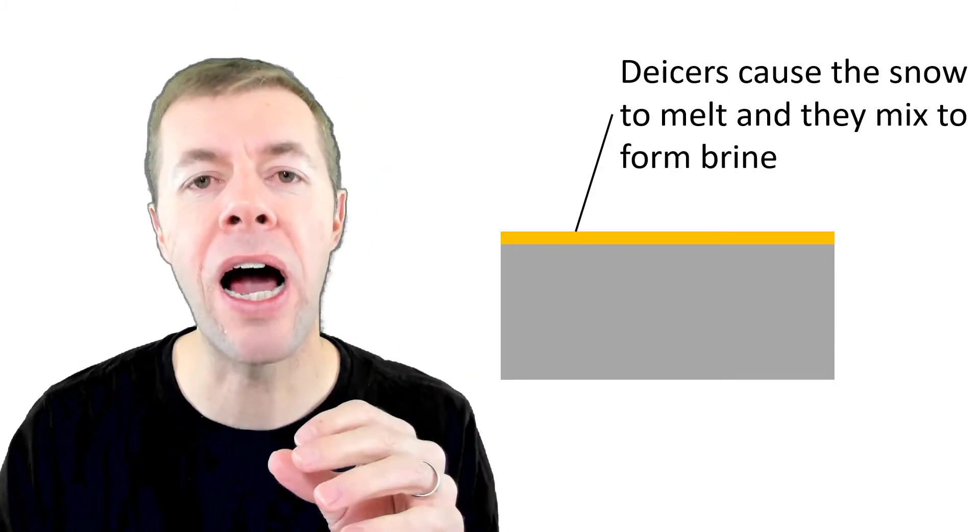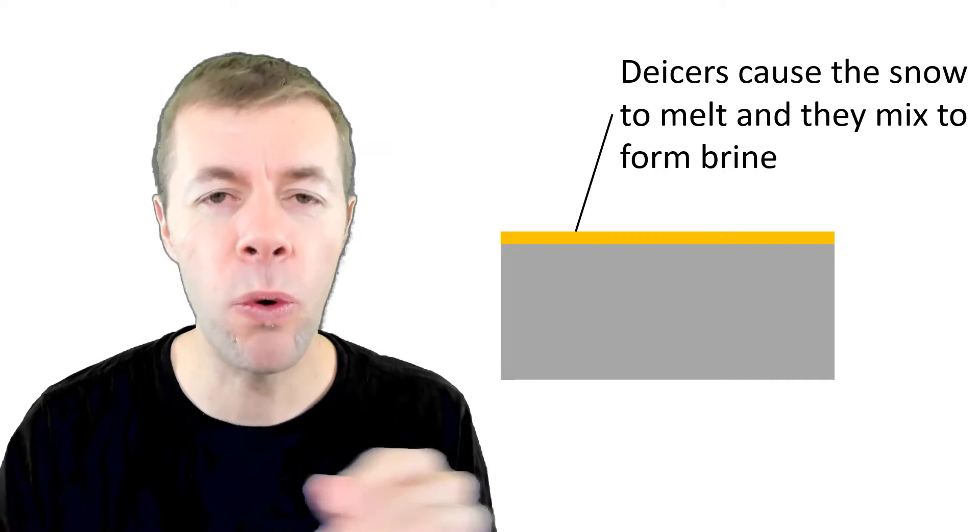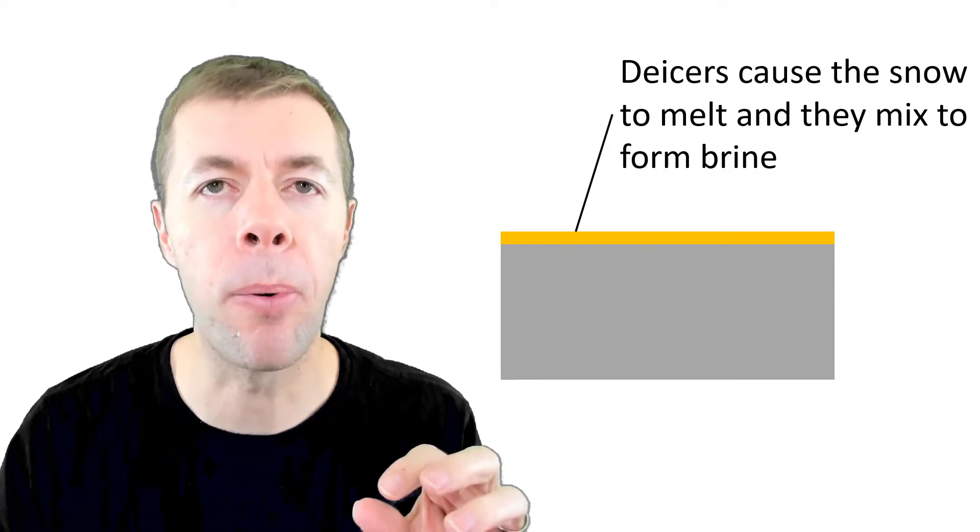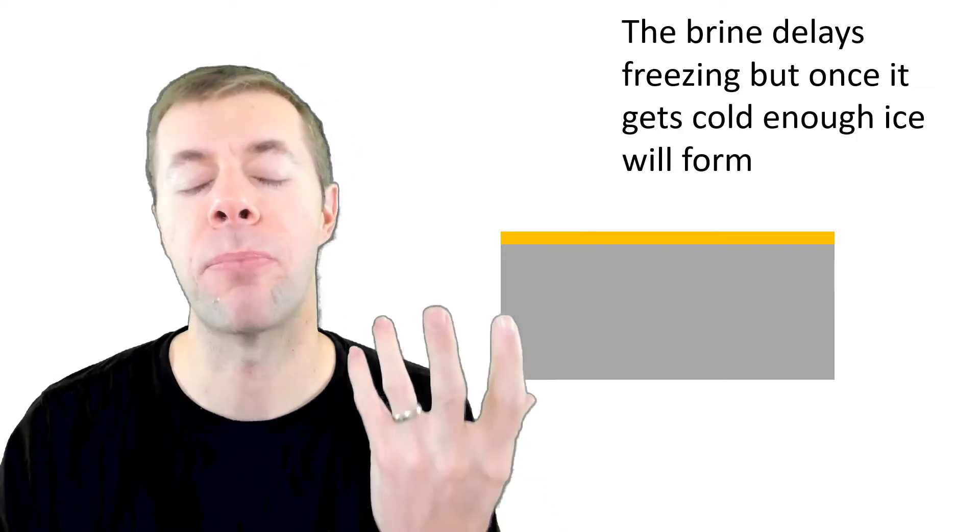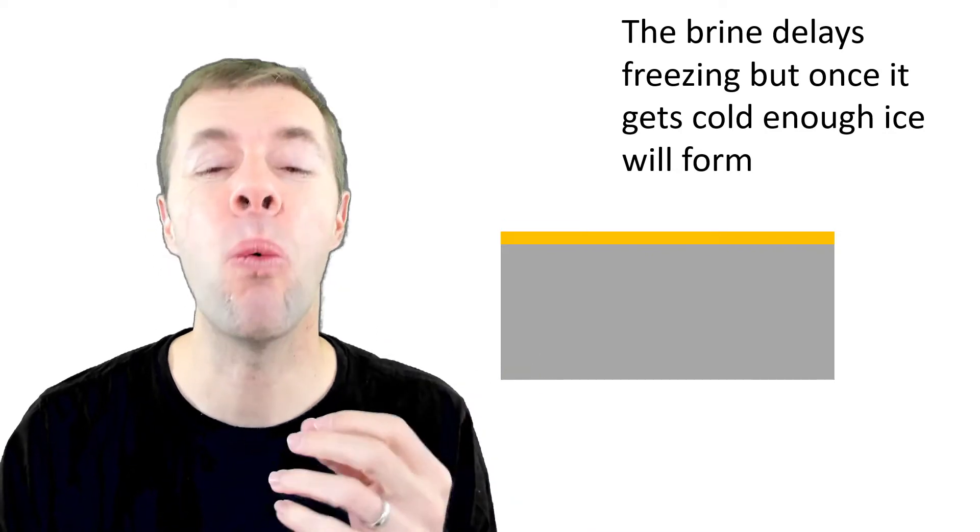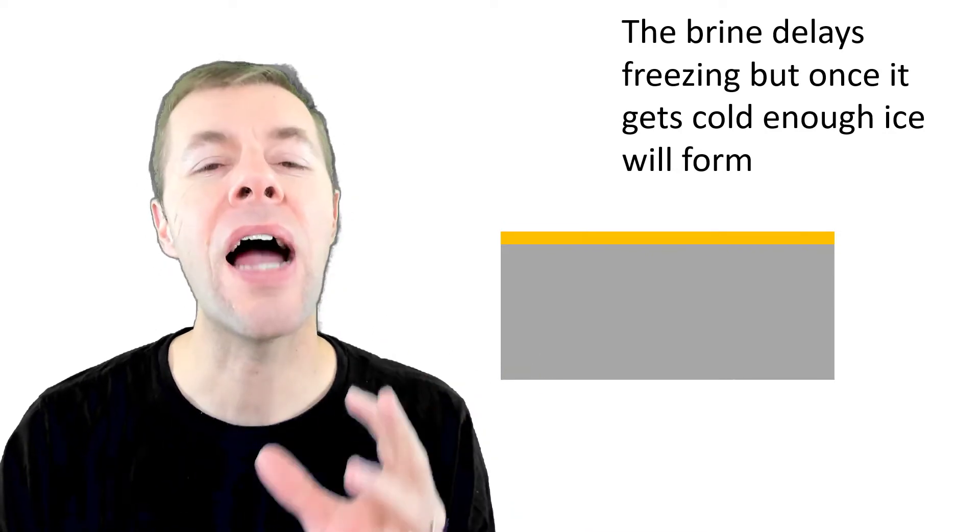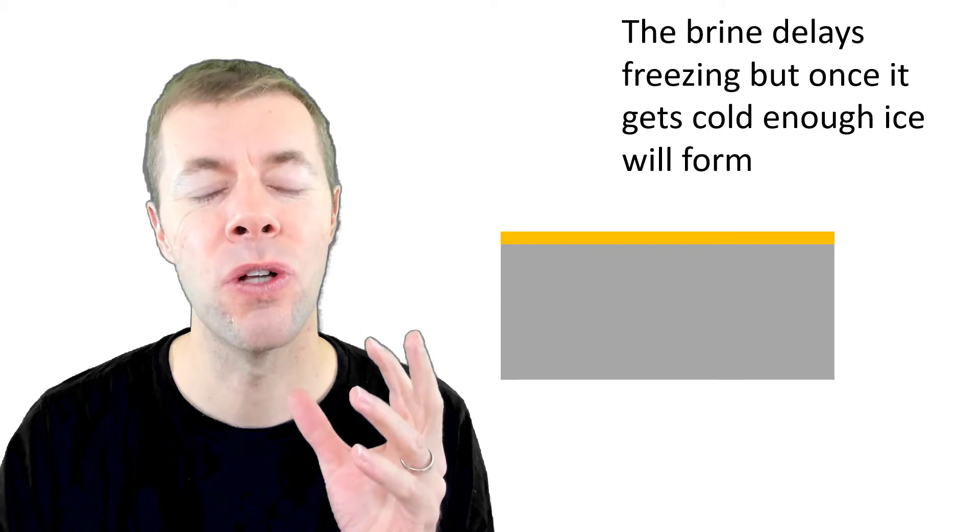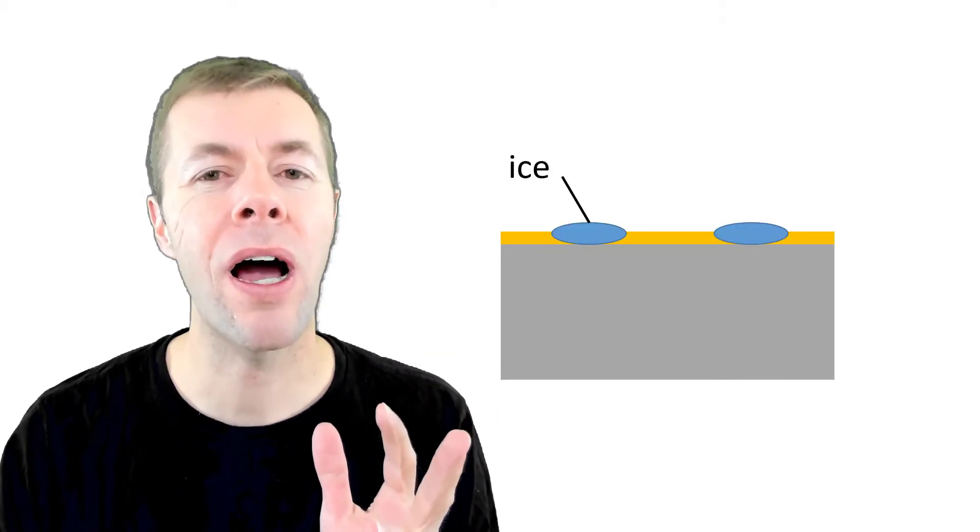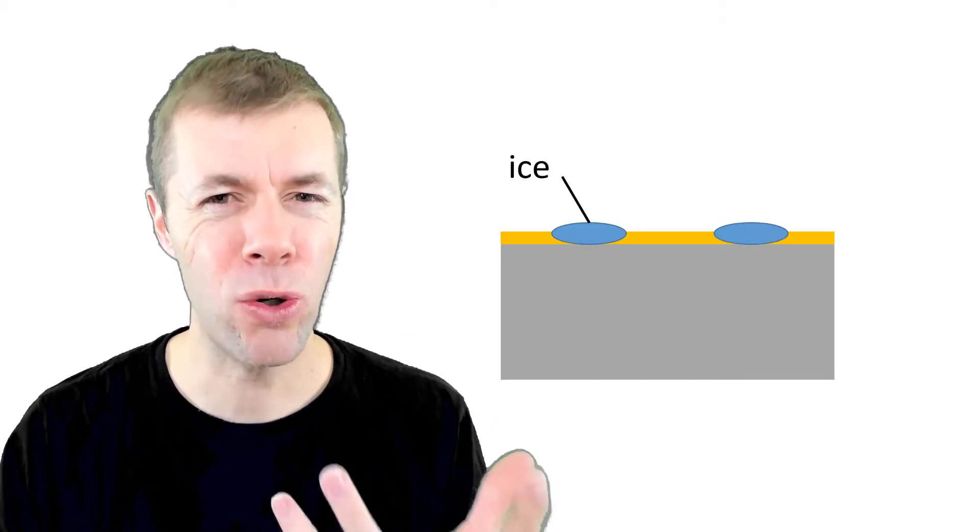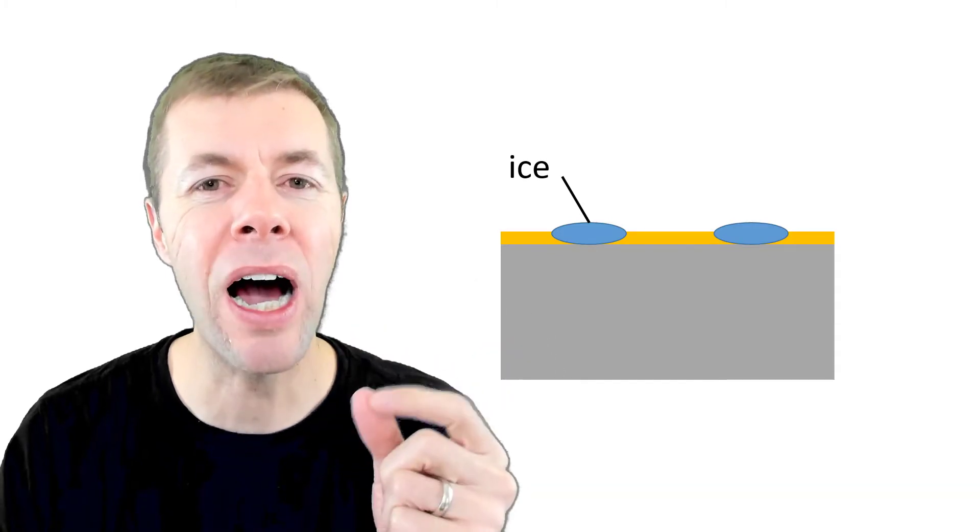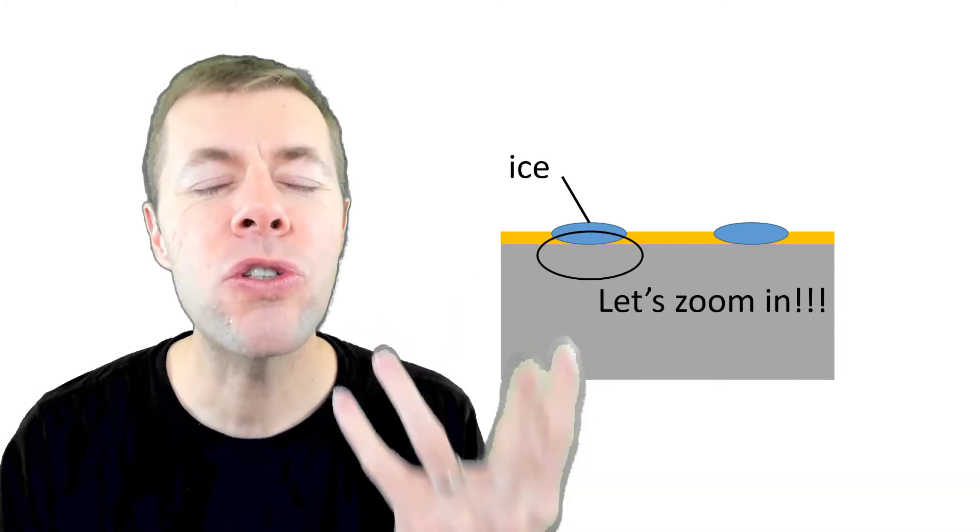The de-icer melts the snow or ice. It combines with the salt and forms a brine. That's great. The brine delays freezing, but once it gets cold enough, ice will still form. And once ice starts to form, it's pretty crazy—there's a tight bond between the ice and the concrete. Let's zoom in so I can show you what I'm talking about.